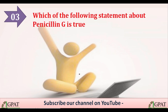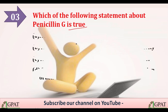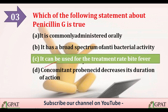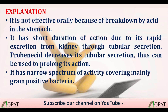Which of the following statements about penicillin G is true? Option A is it is commonly administered orally. Option B is it has a broad spectrum of antibacterial activity. Option C is it can be used for the treatment of rat bite fever. Option D is concomitant probenecid decreases its duration of action. The correct answer is option C — it can be used for the treatment of rat bite fever.